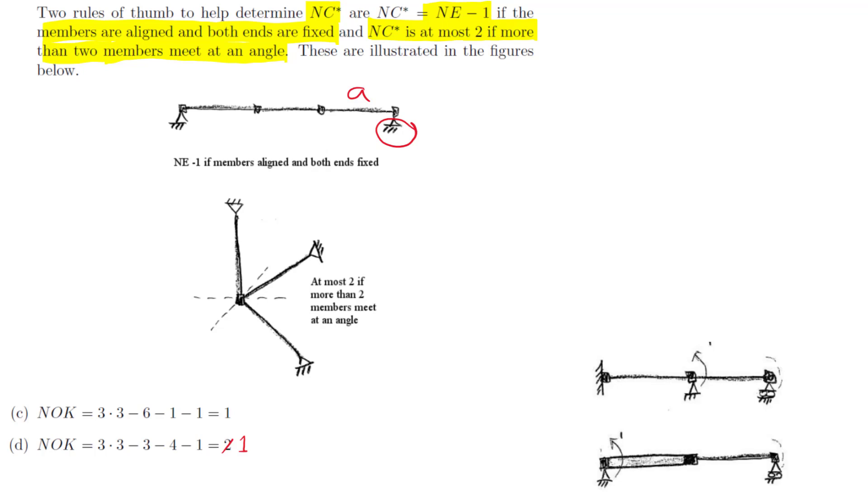We'll consider the vertical member and we'll consider the diagonal member that I'm indicating here. Now the vertical member can move horizontally. The diagonal member can move diagonally as shown there, perpendicular to the member.